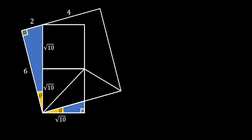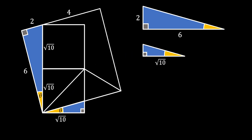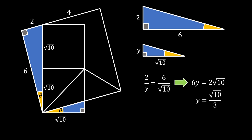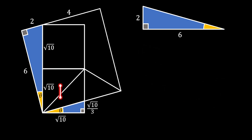Since both triangles share two of the same angles, they are similar. Using the rule of similarity, the ratio of their heights equals the ratio of their bases. Cross-multiplying gives the height of the smaller triangle as √10 / 3.